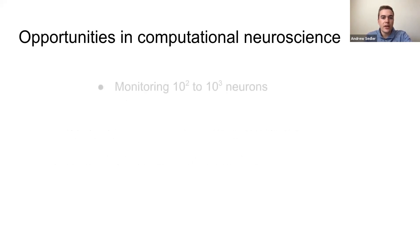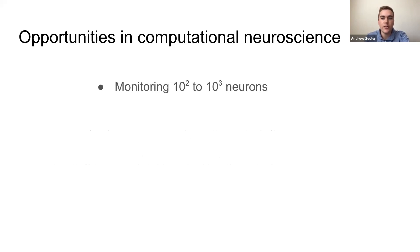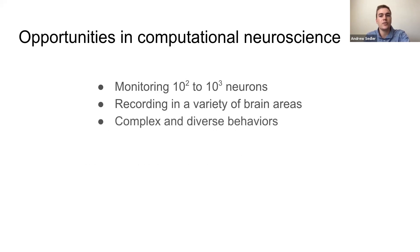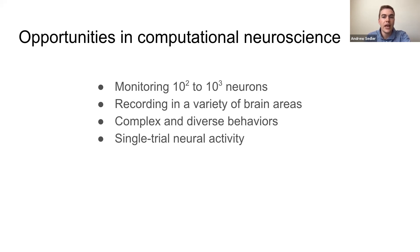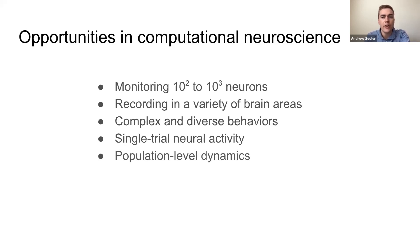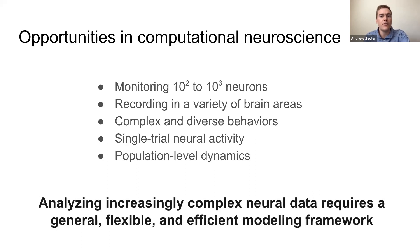In recent years, many new technologies have emerged that are giving us new ways to study the brain. Technologies like neuropixels allow monitoring of hundreds to thousands of neurons in a wide variety of brain areas. Compact and robust recording technologies are also allowing us to capture data during increasingly complex, even natural behaviors. On the modeling side, we have new ways of uncovering single trial neural activity and understanding population level dynamics. However, the sheer volume and dynamical complexity of this data is a critical barrier to uncovering and interpreting these dynamics. Thus, we need a more general, flexible, and efficient modeling framework to complement these technologies.